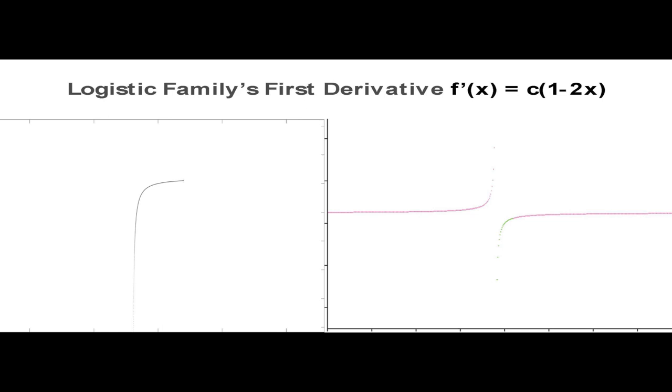This is the first derivative of the logistic family and it's pretty boring. It's just a curve here and that curve is corresponding to this little green line over here. It makes you understand that not all functions are going to be chaotic. Some functions are going to simply exhibit very simple looking bifurcation diagrams or orbit diagrams.